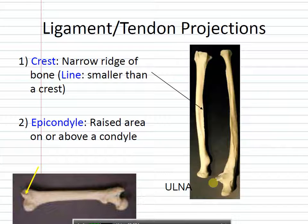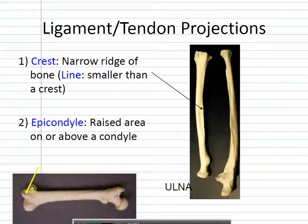I mentioned epicondyle earlier — this rounded part is the condyle, and the epicondyle arrow should be pointing just a little bit higher, above the condyle.